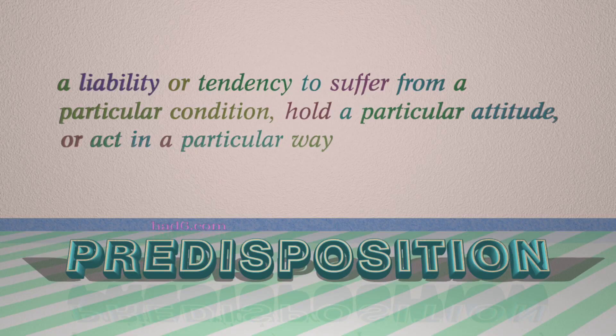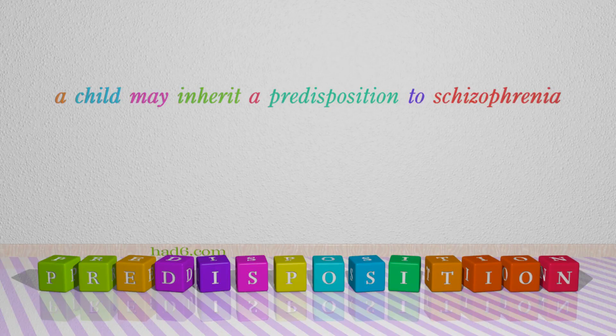Number 7: Predisposition, which means a liability or tendency to suffer from a particular condition, hold a particular attitude, or act in a particular way. For example: a child may inherit a predisposition to schizophrenia.